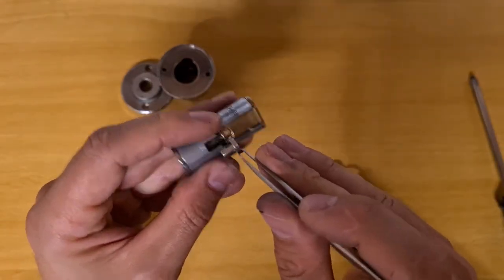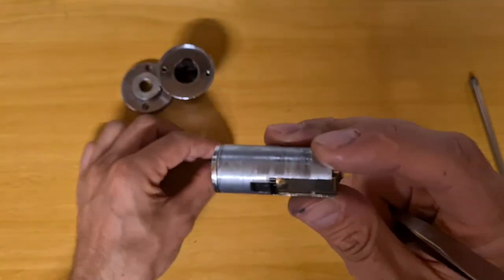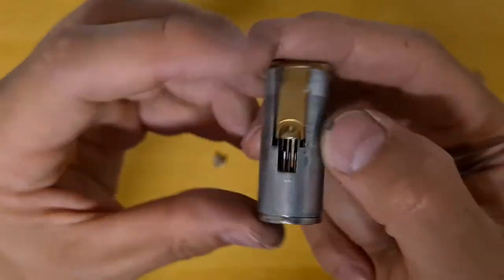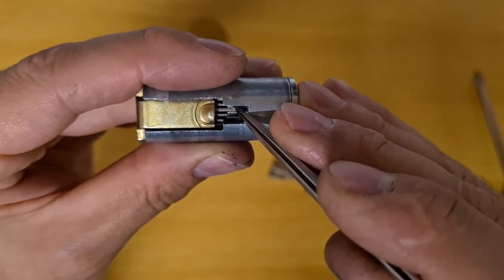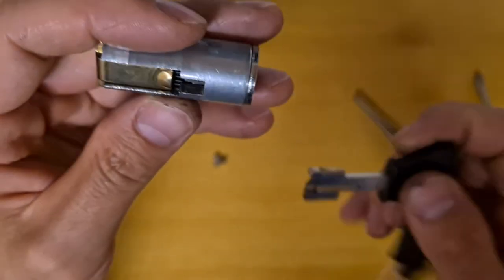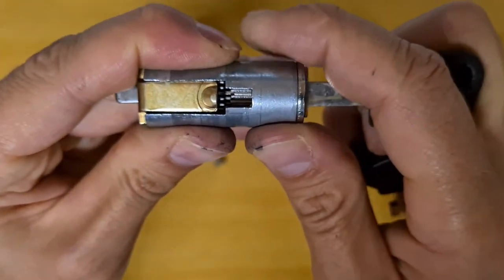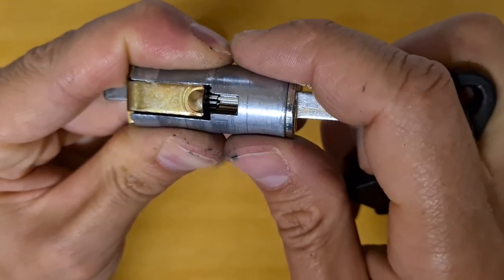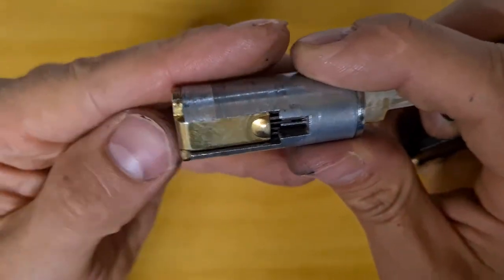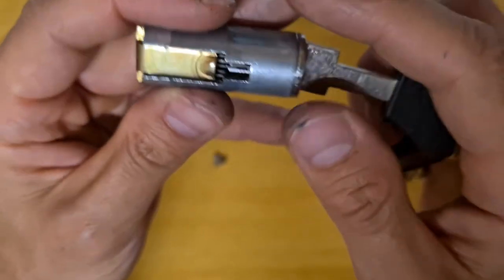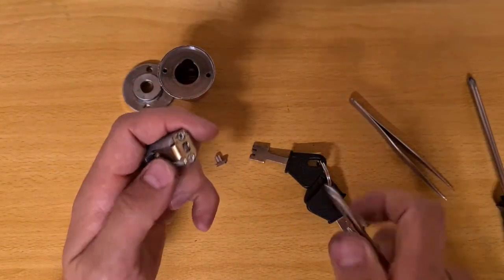That's the sidebar, and I will show later how it interacts with the sliders. And there inside we can see the sliders and the spacers between them. When we insert the key, the grooves in the sliders arrange with the sidebar and it can be retracted. Interesting thing is that there is only one spring for all of them. Let's take this away.